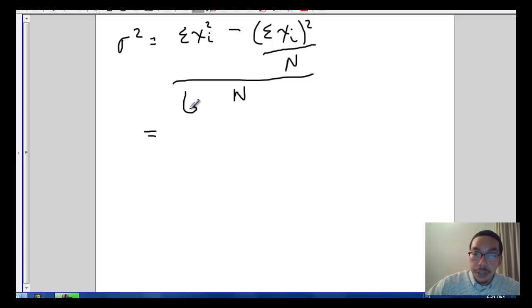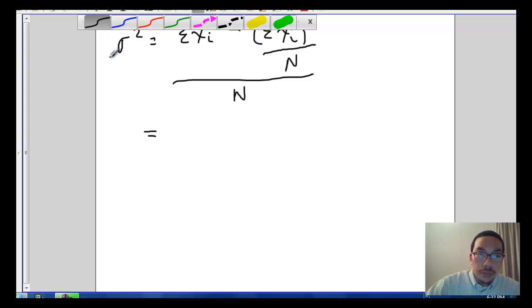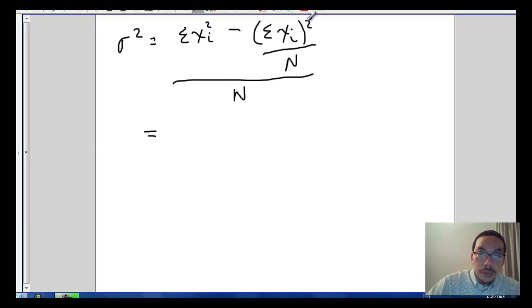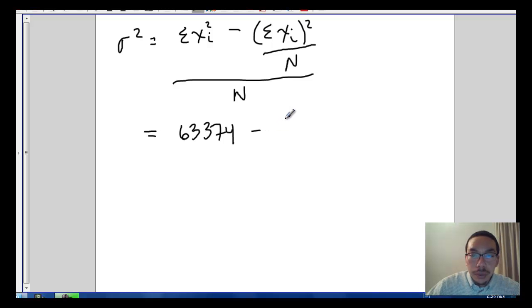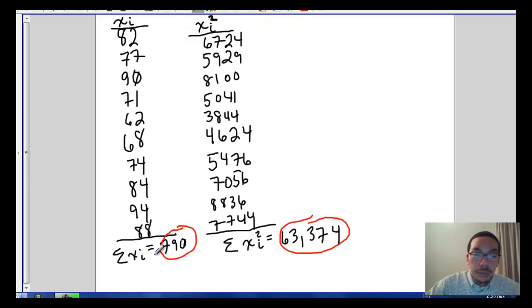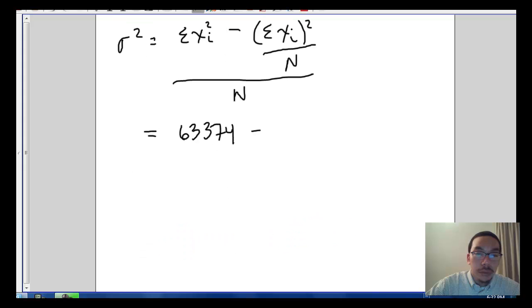So we'll say 63,374 minus the sum of all the x sub i's, which is 790. So we have 790. I'd like to square that and divide it by 10.